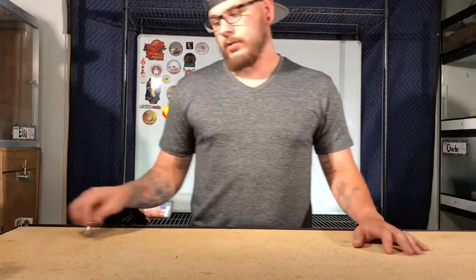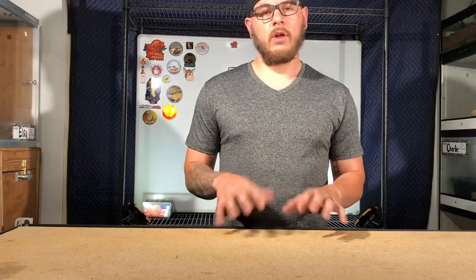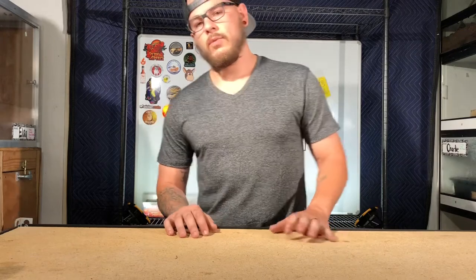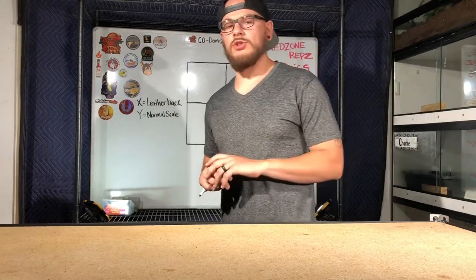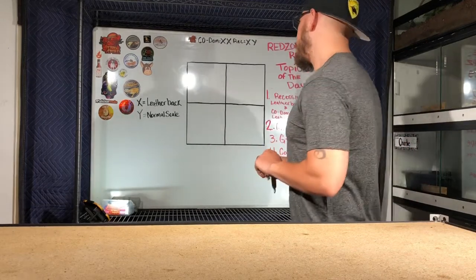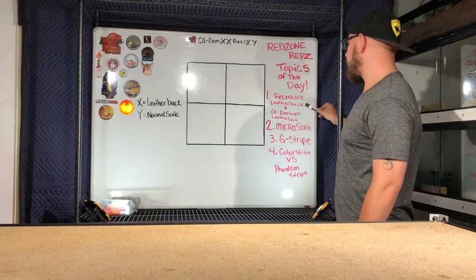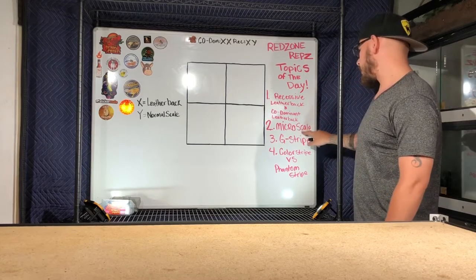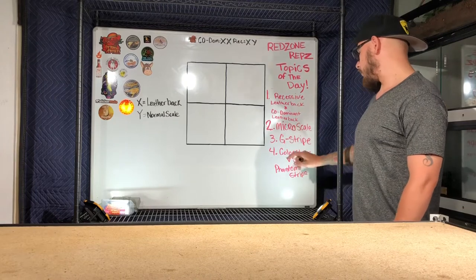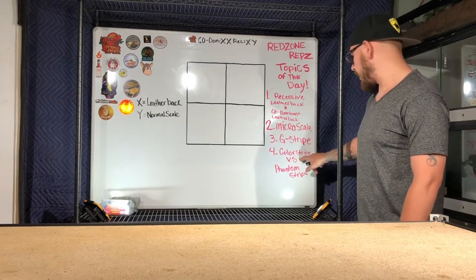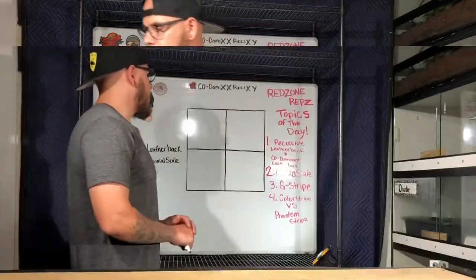Welcome to the channel. I don't see a lot of videos out there that really go in depth about bearded dragon genetics. I see a ton of people breeding, but I don't see a lot of people being knowledgeable about what they're breeding. Today we're going to go over a few things — some more advanced stuff. If you have any questions, please drop them in the comments below. First, we'll talk about recessive leatherbacks and co-dominant leatherbacks. Second, micro scales and how to make a micro scale. Third, the dominant trait G-stripe. And fourth, a recessive trait: color stripe versus phantom stripe — are they the same thing?